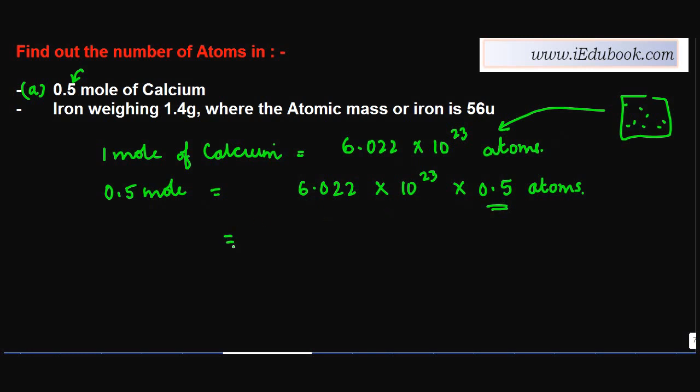If I have to write it in a better manner, I can also write this as 6.022 × 10^22 × 10 × 0.5. What I did was, 10 to the power 23 is effectively 10 multiplied by itself 23 times. So instead of 10^23, I replaced it with 10^22 × 10.